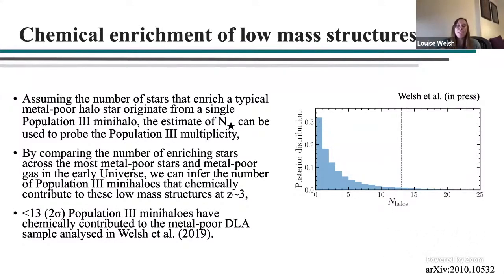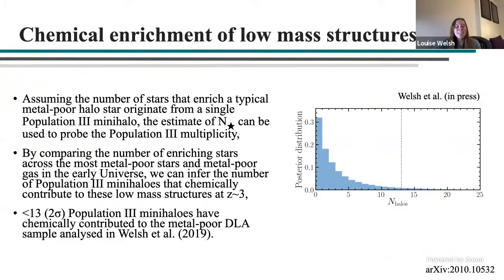Here I'm showing the posterior distribution of this parameter N_halos. Our two-sigma upper confidence limit suggests that fewer than 13 Population III mini-halos may have chemically contributed to the metal-poor DLAs analyzed last year.